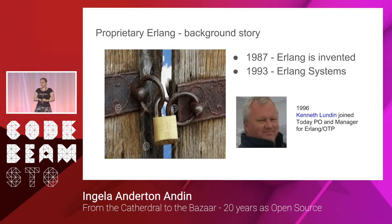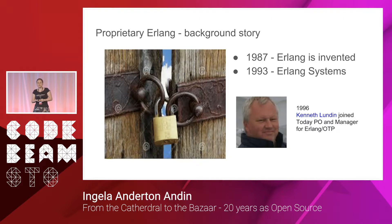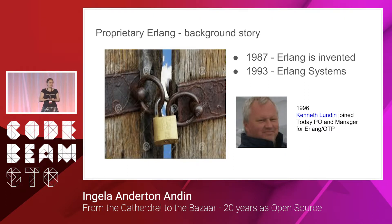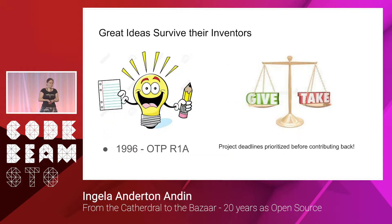In 1987, Ericsson Computer Science Lab invented Erlang. And some years later, in 1993, Ericsson started a department called Erlang Systems, which had training and consultancies to help other projects use Erlang in the best way. Also in 1996, Kenneth Lundin came into the picture — today he's the product owner and manager of the Erlang OTP team. But great ideas survive their inventors, and in 1996 the computer science lab handed over to a product development unit, and this is when we had the first OTP release.